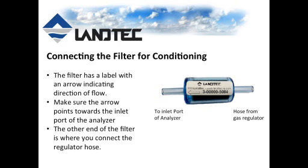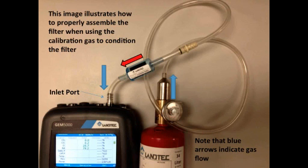A quick note on connecting the filter for conditioning. You'll notice that the filter itself has a direction arrow, and that arrow indicates the direction of the actual gas flow. You want to make sure that the arrow points towards the inlet port of the analyzer. In this image, the left side of the filter will be connected to the analyzer and the right side will be connected to the hose from the regulator of the high-purity gas bottle.